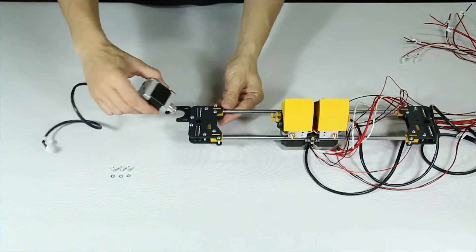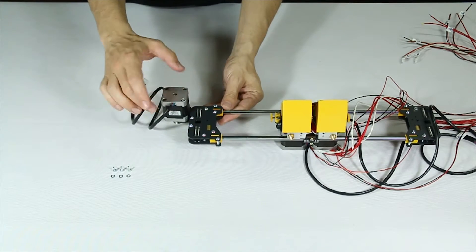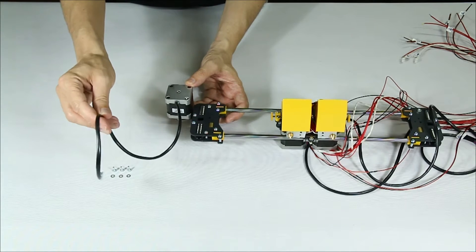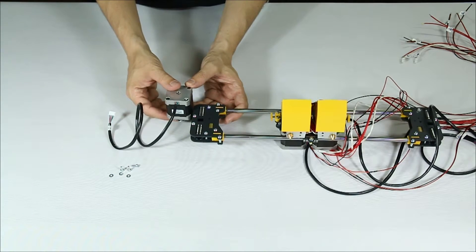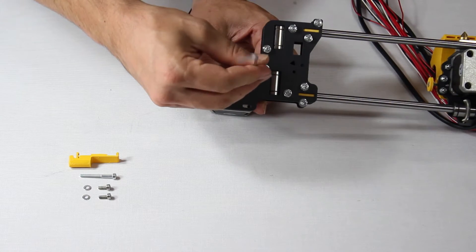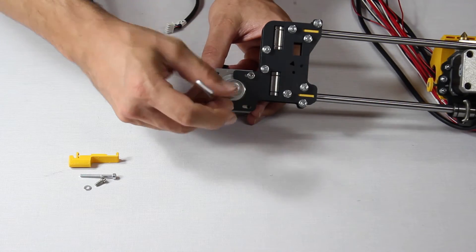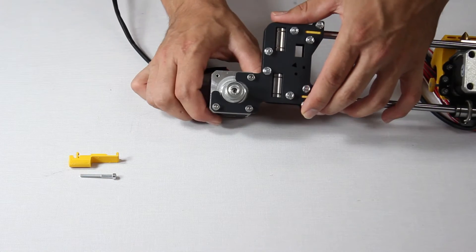Now it's time to attach the stepper motor to the x-axis. First, notice how the motor is oriented in relation to the axis. Second, make sure that the wiring coming out of the motor is facing the direction shown. Fasten the washers and the screws into the three holes. Don't fasten them all the way since you will have to adjust the position of the motor to mount a belt later on.